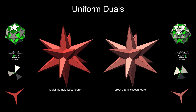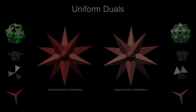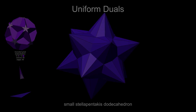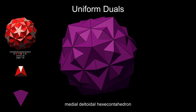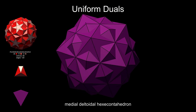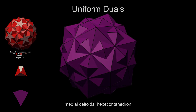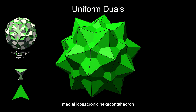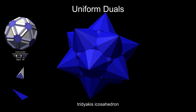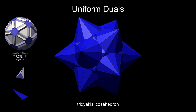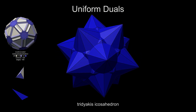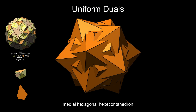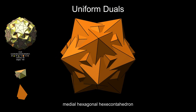The medial triambic icosahedron and great triambic icosahedron are another pair that are externally identical. The small stellated pentakis dodecahedron has 12 relatively blunt vertices on the outside. The medial deltoidal hexacontahedron has all vertices visible to the outside, a mixture of 4- and 5-fold vertices. The medial icosacronic hexacontahedron has alternating 5-fold and 6-fold vertices. The tridyakis icosahedron has prominent 10-fold vertices, with small 6-fold vertices nestling between them. The medial hexagonal hexacontahedron, being the dual of a chiral snub polyhedron, has unusually shaped faces and an intriguing twisted appearance.